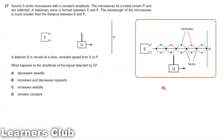Since the wavelength is much smaller than the distance SP, there are many complete waves between S and P. As the detector moves from S to P, it passes through multiple nodes — points of minimum displacement — and antinodes — points of maximum displacement. When moving from a node to an antinode, the detected amplitude increases; when moving from an antinode to a node, it decreases.